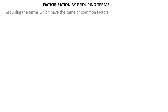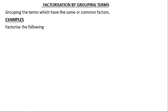Factorization by grouping terms — grouping the terms which have the same or common factors. So factorization by grouping terms is all about looking for common factors. We have to factorize the following.